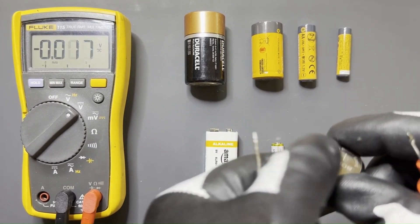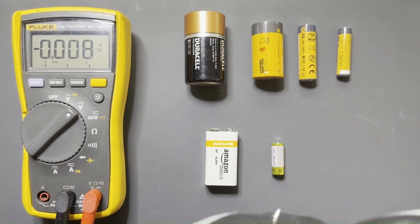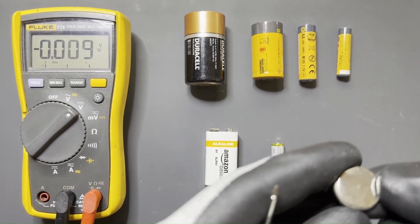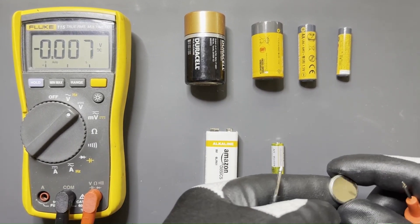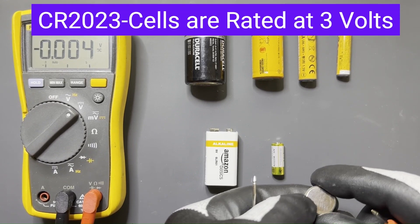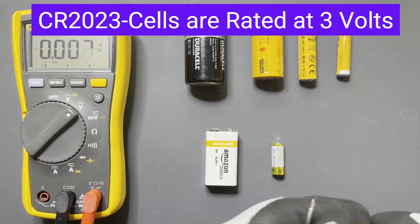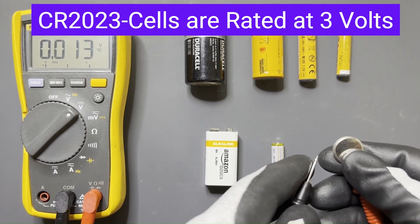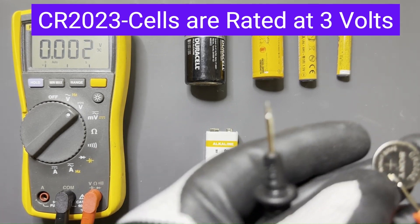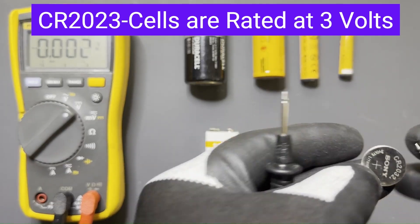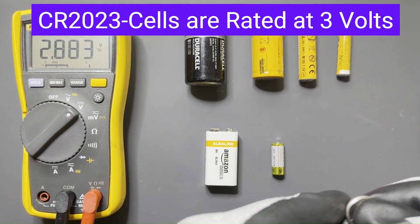This is the button cell commonly found in key fobs and garage remote controls. These are a little different - what you may refer to as the pointed side on this, the small conductor, is actually negative. The larger conductor is actually positive, so this kind of goes against the convention of the other types of batteries. The red lead is going to go on the positive - it'll say positive right there on the battery - and then the negative is going to go on the other side. We're getting 2.83. That's a bad battery.